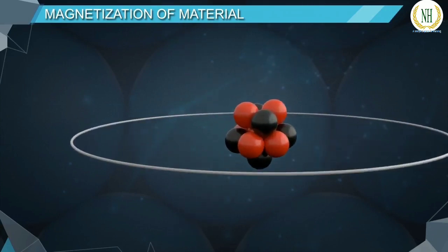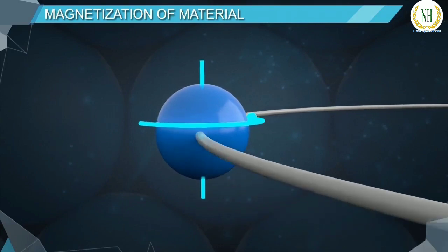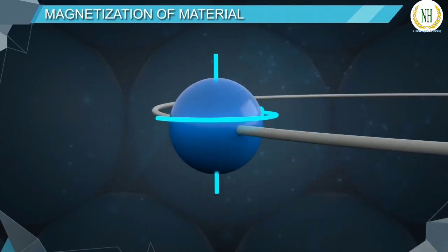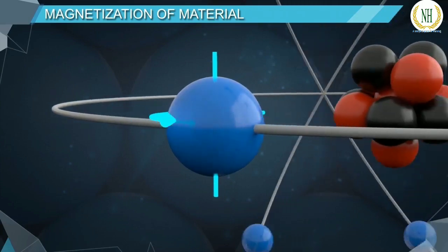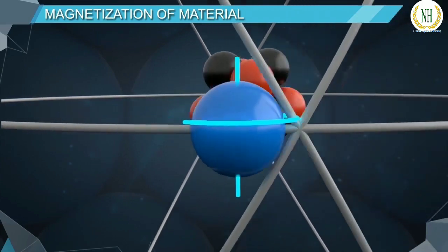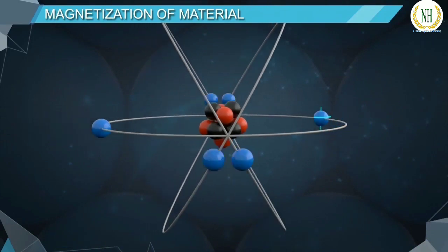Beside the orbital motion, the electrons also have a spin motion along an axis, similar to earth's rotation. This spin also constitutes a magnetic moment, which has a fixed magnitude of 9.285 × 10⁻²⁴ joule per tesla. The nucleus has a magnetic moment, but it is very negligible when compared to that of electrons.